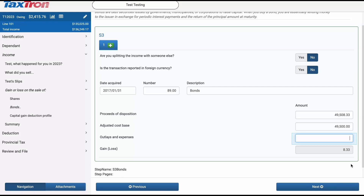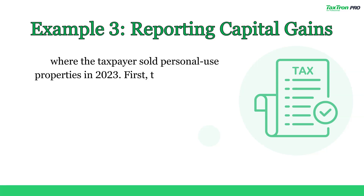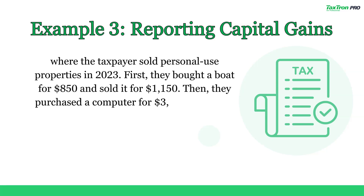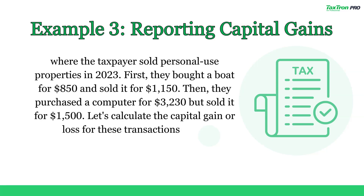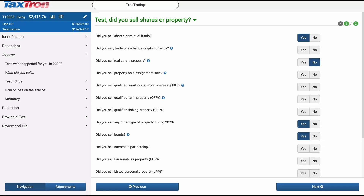Let's tackle the third scenario where the taxpayer sold personal-use properties in 2023. First, they bought a boat for $850 and sold it for $1,150. Then, they purchased a computer for $3,230 but sold it for $1,500. Let's calculate the capital gain or loss for these transactions using web.taxtron.ca.